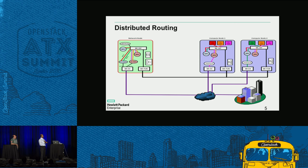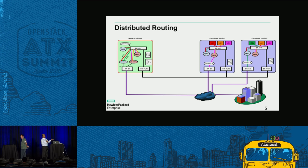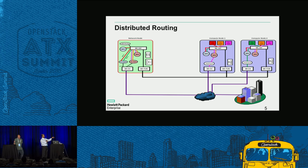The SNAT was centralized, and the issue is a single point of failure. L3 HA was introduced in Juno, and DVR was introduced at the same time, but there was no DVR SNAT-HA for the routers. There was an issue running L3 HA along with DVR, and that is the solution we tried to solve here.